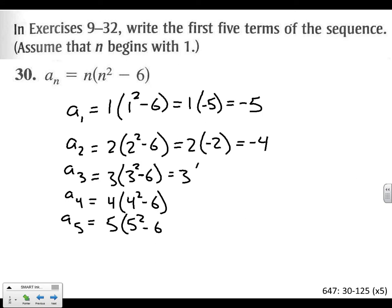3 times 9 minus 6 is 3, which is 9. 4 times 16 minus 6 is 10, so we've got 40. And then finally, we've got 5 times 25 minus 6 is 19. 19 times 5 is 95. First five terms of that sequence.